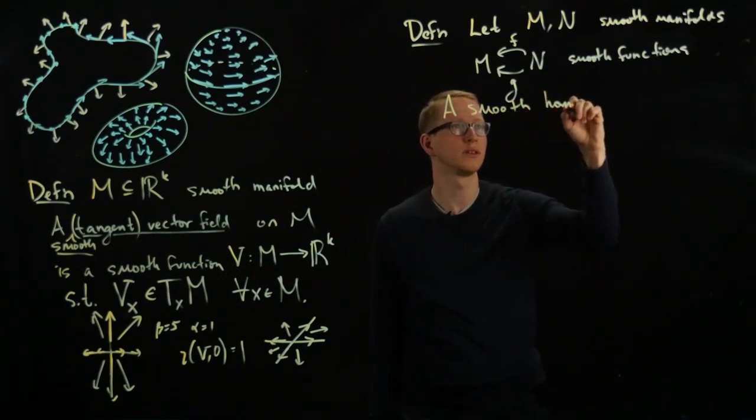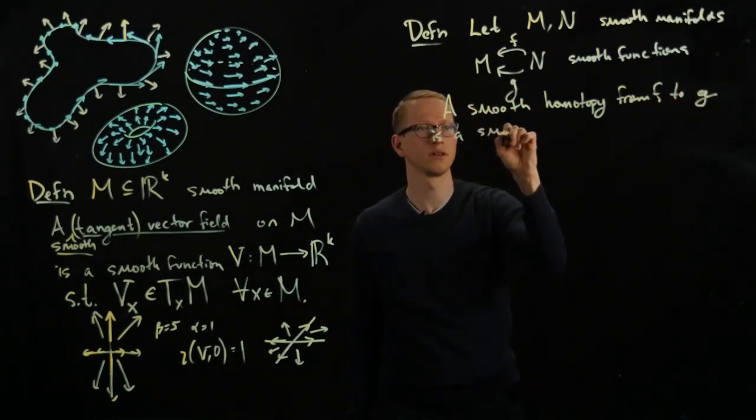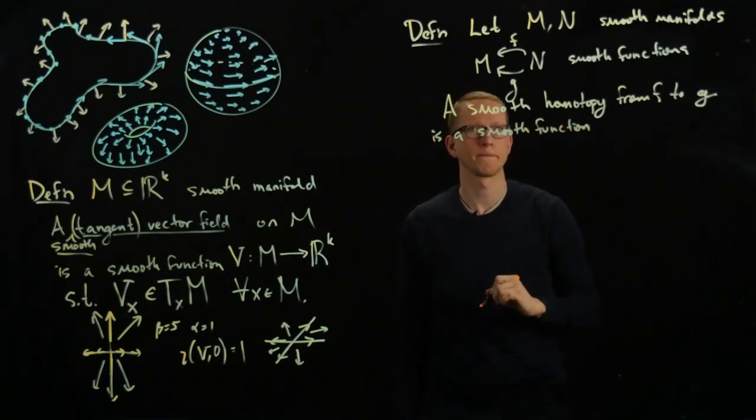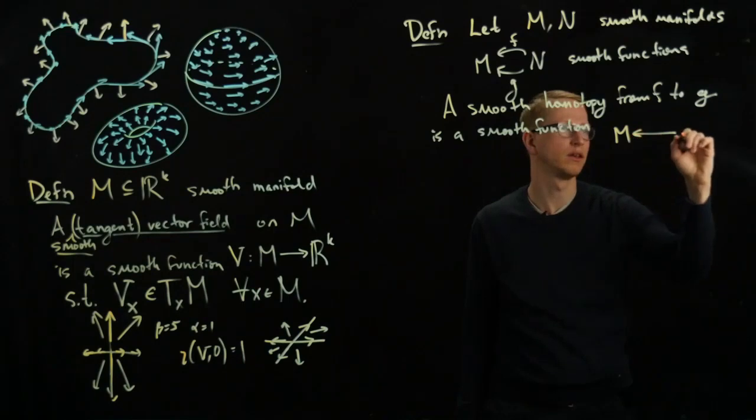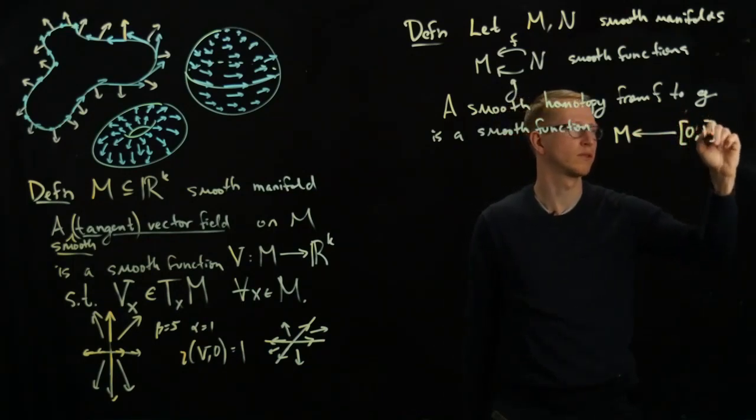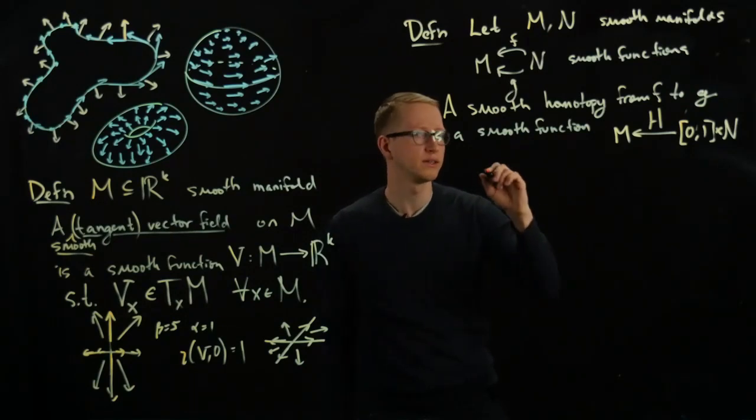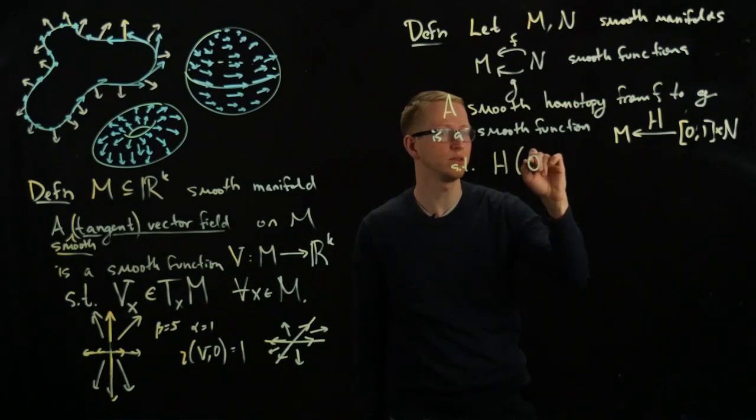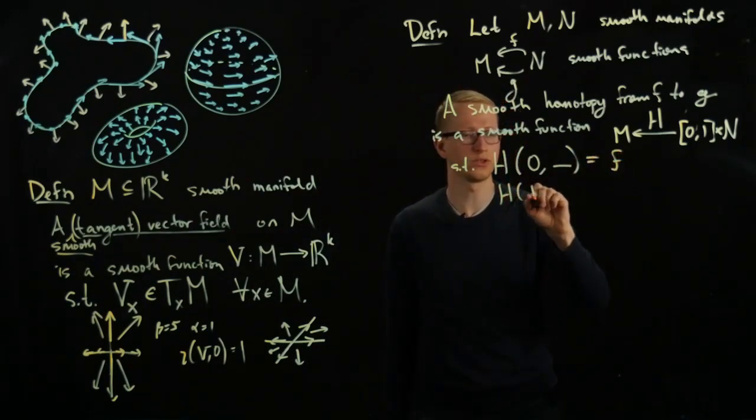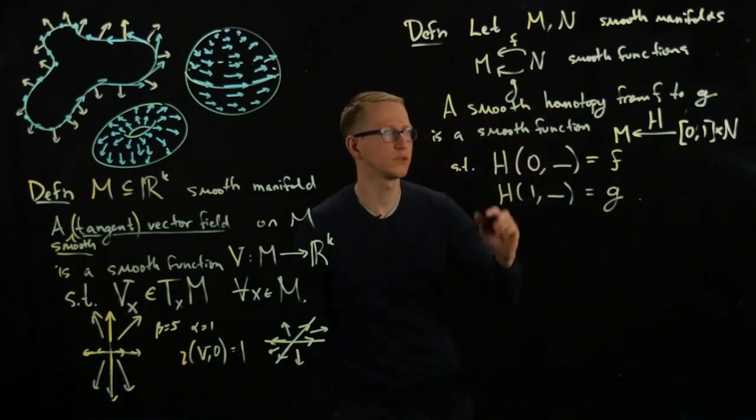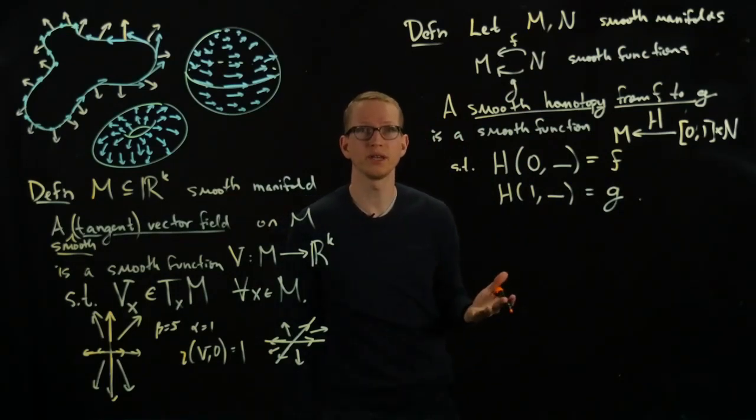So a smooth homotopy from f to g is a smooth function. And it's going to depend on a parameter, so we'll make that parameter a little bit simple, and we'll just say that it's the unit interval. So we have a smooth function from the unit interval cross the manifold, such that if I restrict h to 0, and here dash just means that I'm leaving that as an open variable, then this gives me the function f, and if I restrict to 1, then I get the function g. So this is what a smooth homotopy from f to g is. And f and g are said to be smoothly homotopic if such an h exists.